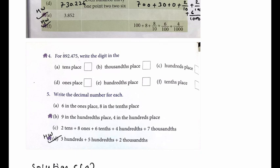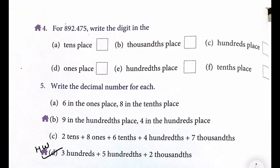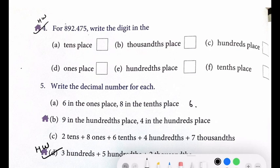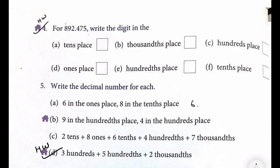Let's solve question number 4 for the number 892.475. Write the digit in tens place — this is your homework, we had just solved similar ones. Next: write the decimal numbers for each. Six in the ones place: after ones place there is a point, then eight in the tenths place. So you write 6.8.